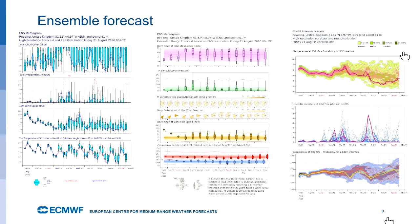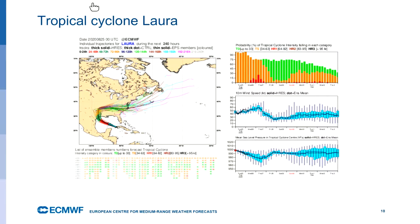I mentioned earlier that it's quite an appropriate week to be presenting this. At the moment most of my time is looking at the forecast with tropical cyclone Laura — Hurricane Laura — which is in the Gulf of Mexico. We had one storm before that, tropical cyclone Marco, which was just off the coast of Louisiana. These are the ensemble forecasts for tropical cyclone Laura.